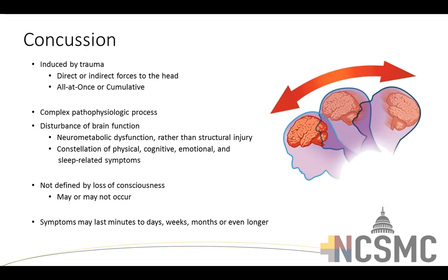So what is a concussion? A concussion is a mild traumatic brain injury caused by forces applied to the brain via kinetic energy. This kinetic energy can be applied in a classic direct mechanism — for example, two heads colliding together, helmet to helmet — generating a shockwave of kinetic energy applied to the brain that induces this injury.